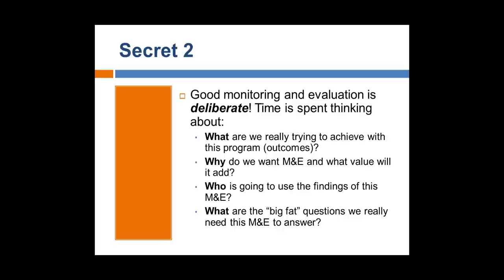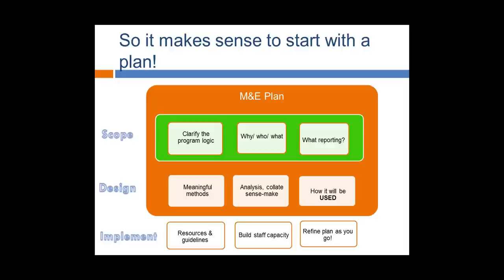Moving on to secret number two: good monitoring and evaluation doesn't just happen. It needs to be planned, and time needs to be spent thinking about why you're doing it. The sorts of things you need to think through are: what are we really trying to achieve with the program or project? What are the outcomes we're trying to achieve? Why do we want M&E and what value will it add? Who is going to use the findings? And what are the big, fat questions we really need this M&E to answer? All of that is about scoping out the program and the M&E, and it's absolutely vitally important to get good M&E embedded in a program.